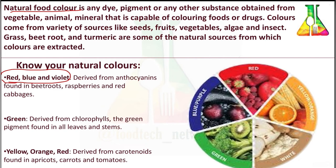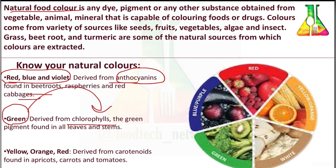If the food color is red, blue, or violet, it will be derived from anthocyanins and will be found in beetroots, raspberries, and red cabbage. If the color is green, it will be derived from chlorophylls and found in all leaves and stems. If the color is yellow, orange, or red, it will be due to carotenoids, found in apricots, carrots, and tomatoes.